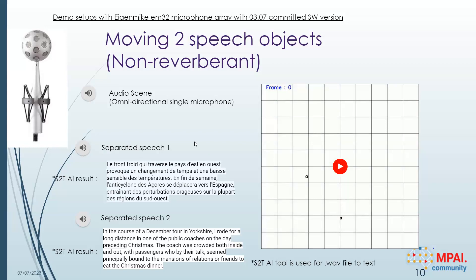The separated speech objects: 'In the course of a December tour in Yorkshire, I rode for a long distance in one of the public coaches on the day preceding Christmas. The coach was crowded both inside and out with passengers who, by their talk, seemed principally bound for the mansions of relations or friends to eat the Christmas dinner.' This is an AIM output, so it can be used in different AIMs — for example, a speech-to-text AIM. This output is already fed to an AI algorithm that creates text for these speech objects.